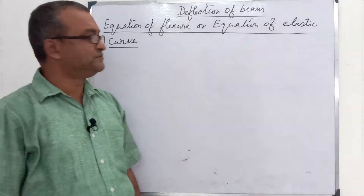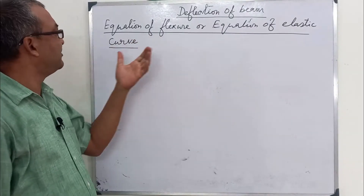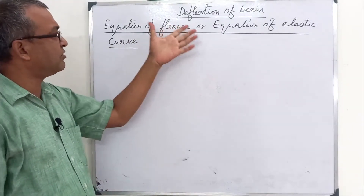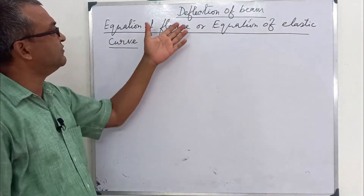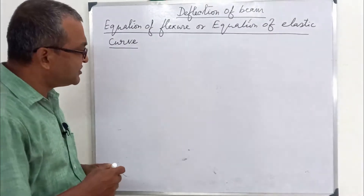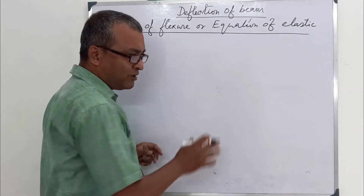Deflection of beam. We have the equation of flexure and the equation of elastic curve. This deflection of beam — what does the beam deflection mean?